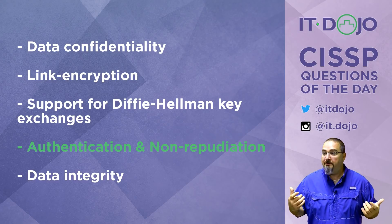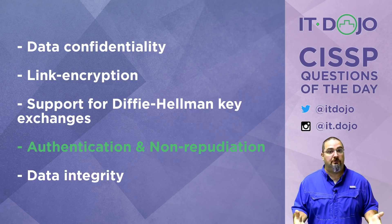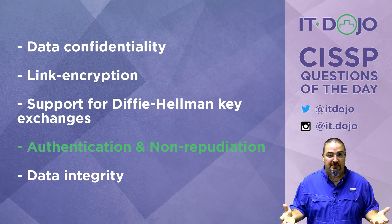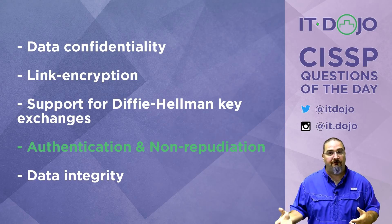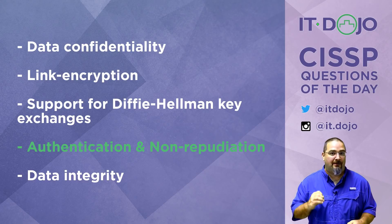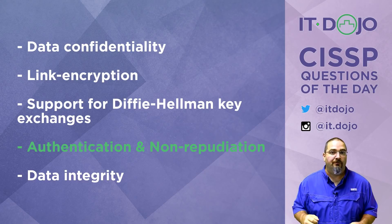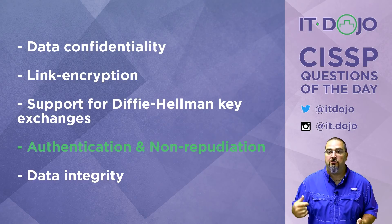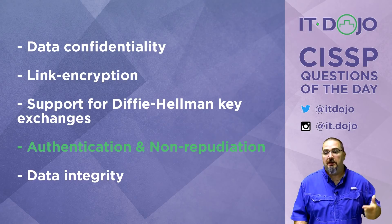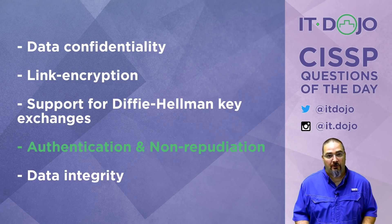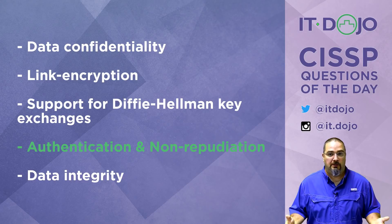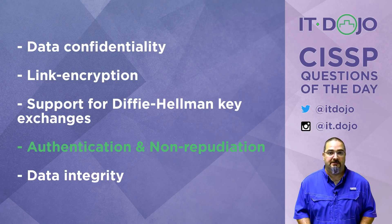Without a public key infrastructure, people can still sign code and still encrypt emails, but they're doing so with untrusted keys. Your level of confidence in that information should be about zero. The only thing you know for sure is that you're looking at a message that's been hashed or encrypted — but you don't know who did it, and you certainly can't hold them to account for it. The public key infrastructure is what brings trust to the table.